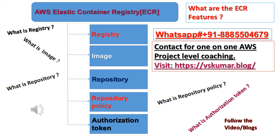9. What is Repository? An Amazon ECR Image Repository contains your Docker images, Open Container Initiative (OCI) images, and OCI-compatible Artifacts. For more information, see Amazon ECR Private Repositories.